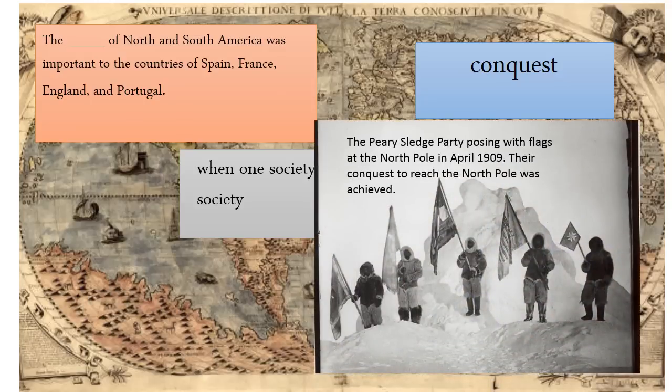Here is the Peary Sledge Party posing with flags at the North Pole in April 1909. And their conquest to reach the North Pole was achieved.